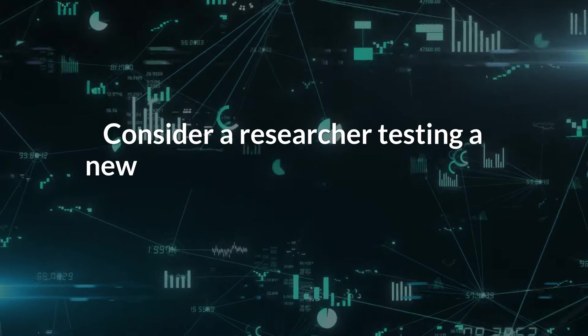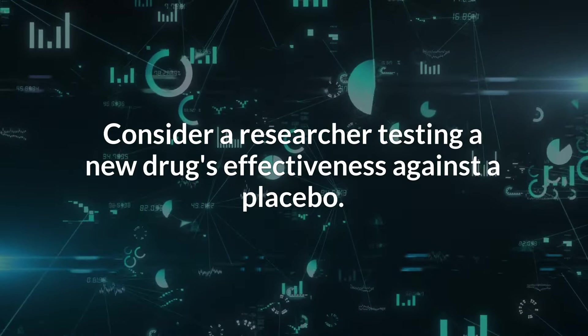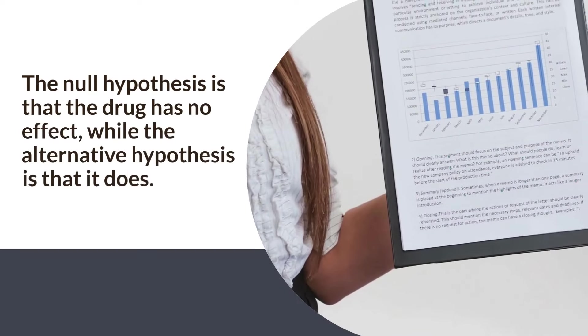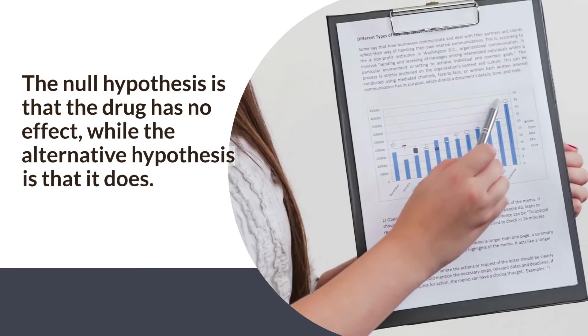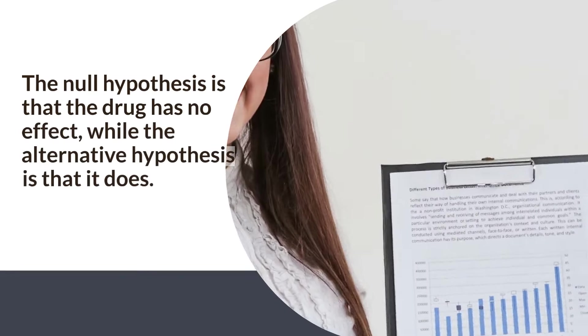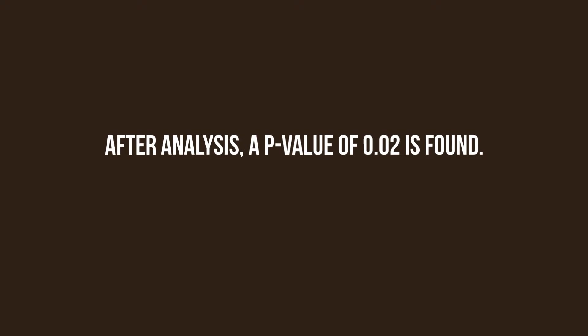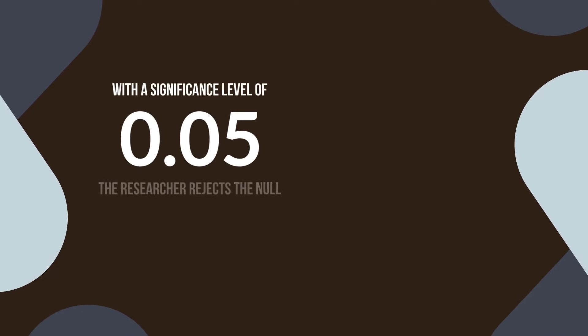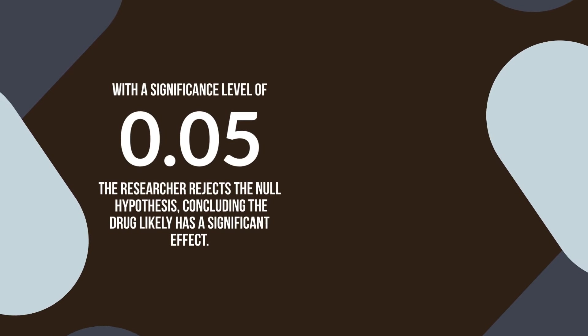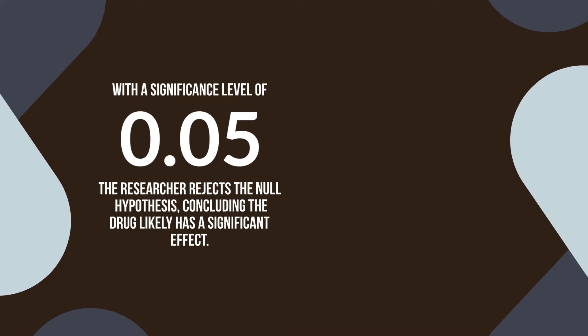Consider a researcher testing a new drug's effectiveness against a placebo. The null hypothesis is that the drug has no effect, while the alternative hypothesis is that it does. After analysis, a p-value of 0.02 is found. With a significance level of 0.05, the researcher rejects the null hypothesis, concluding the drug likely has a significant effect.